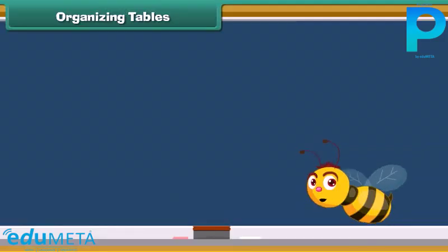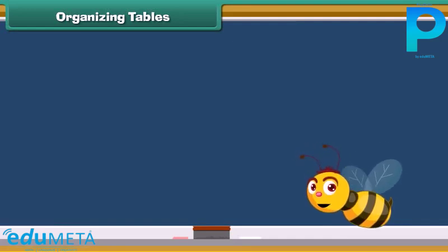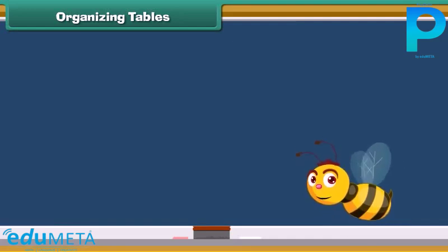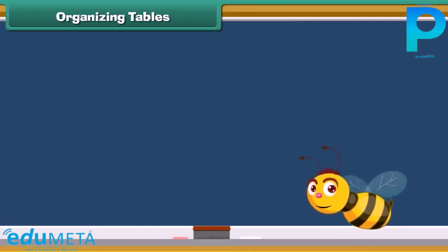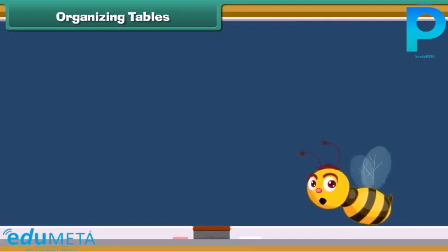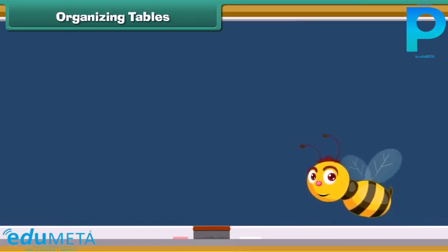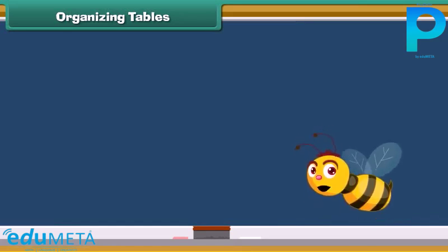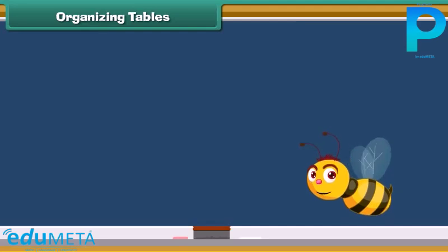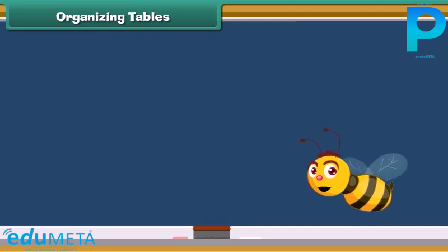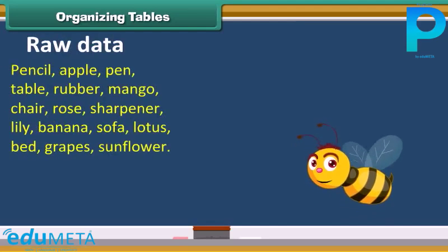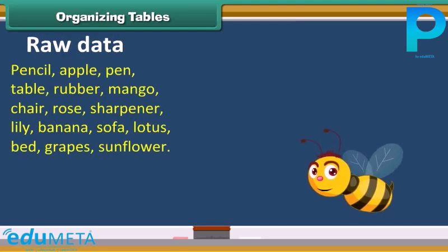Friends, it is easier to find out things when they are kept properly. Well arranged things are easy to handle. Similarly, organized data is easy to interpret. Unorganized data is called raw data.